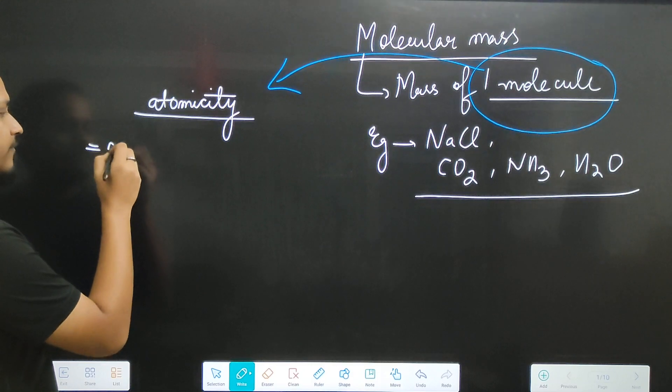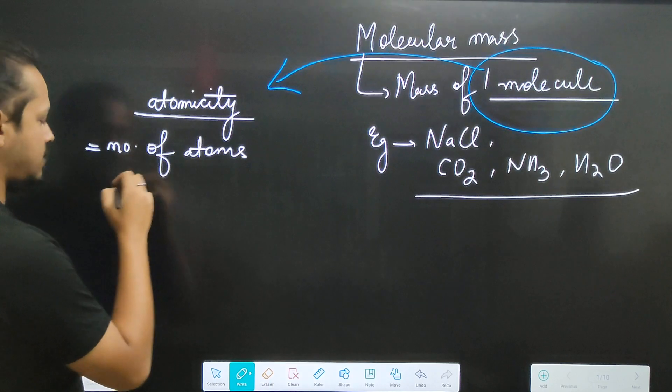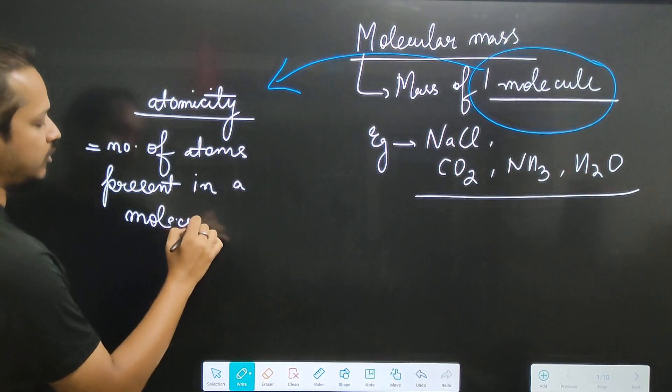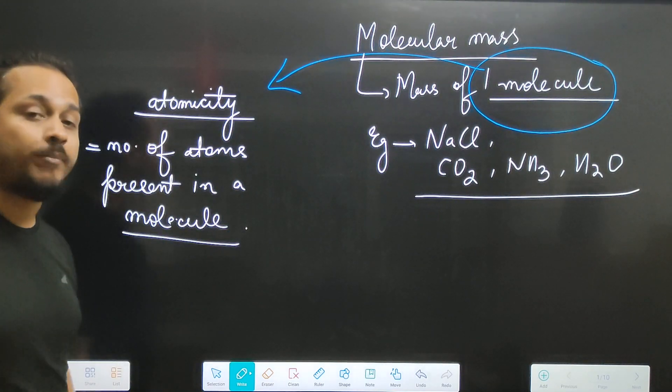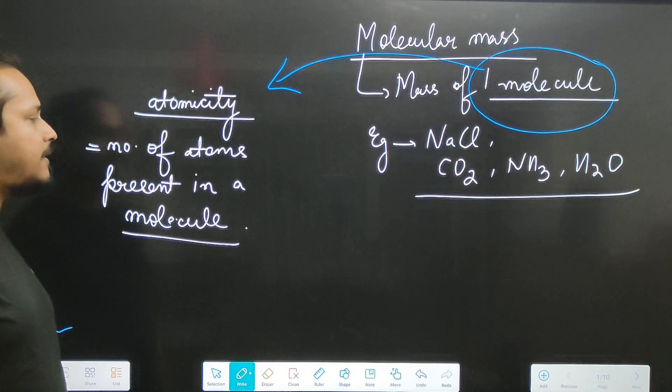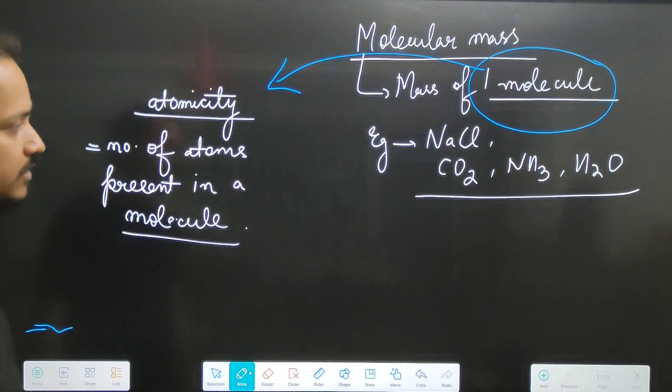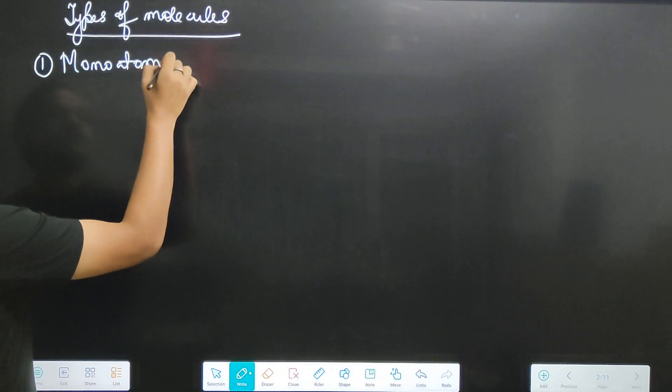Atomicity means the number of atoms present in a molecule. So we need to know how many atoms are connected in a molecule. That is what atomicity tells us — the number of atoms present.